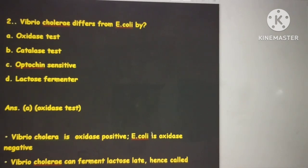Remember OINS: O for oxidase, I for indole, N for nitrate reduction, and S for string test. These are all positive for Vibrio cholerae.